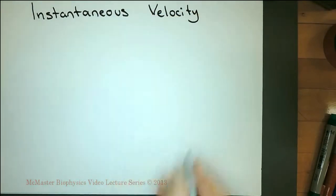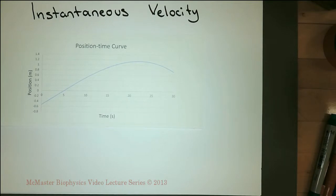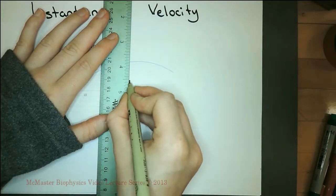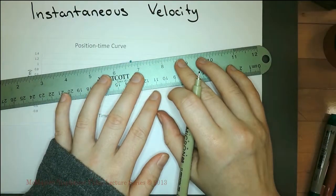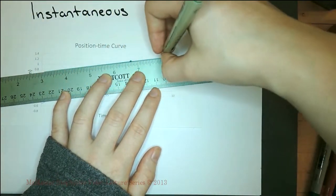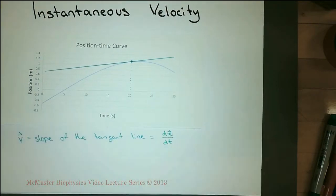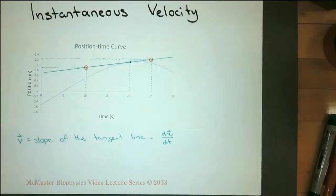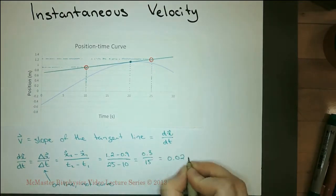Instantaneous velocity is the velocity at a specific time. To find the instantaneous velocity at 20 seconds, we draw a tangent line to the position-time curve where time is 20 seconds. A tangent line is like a secant line where the distance between the two points on the curve is so small that it is only one point. To find the slope of the tangent line, we use two points on the tangent line for our calculation. This is the velocity at 20 seconds.